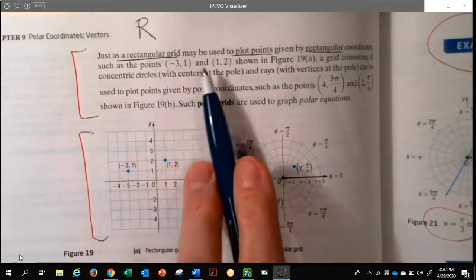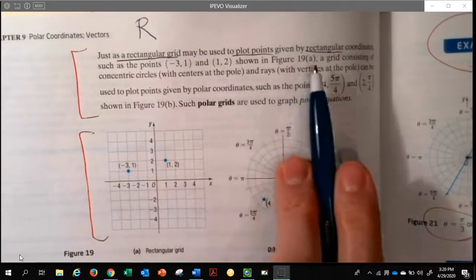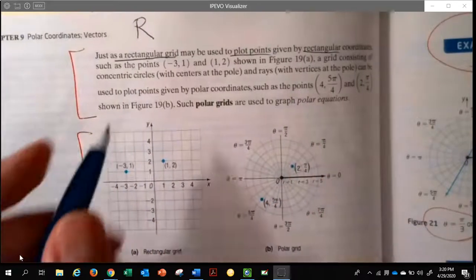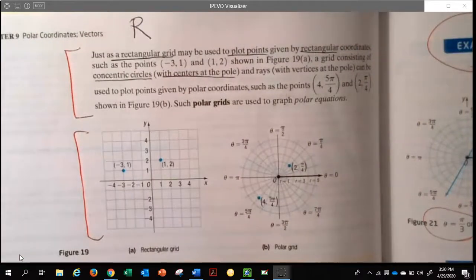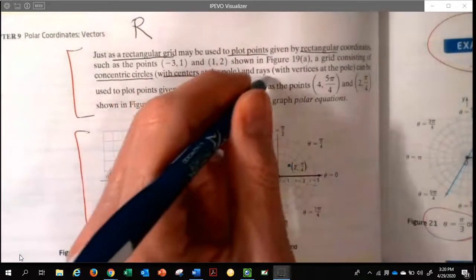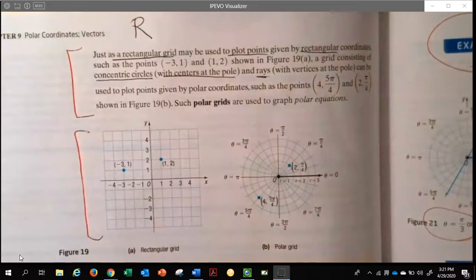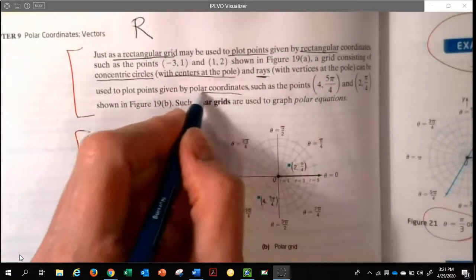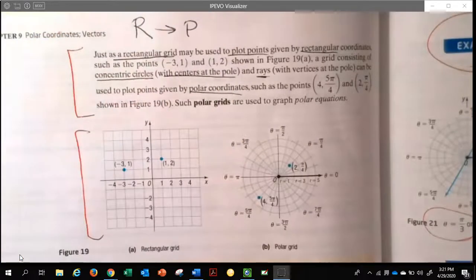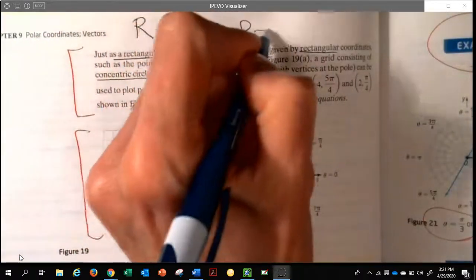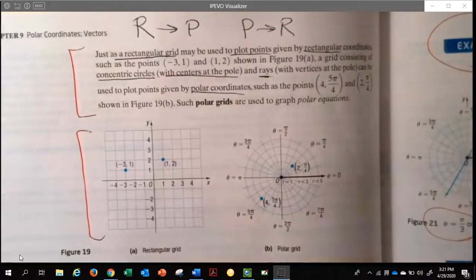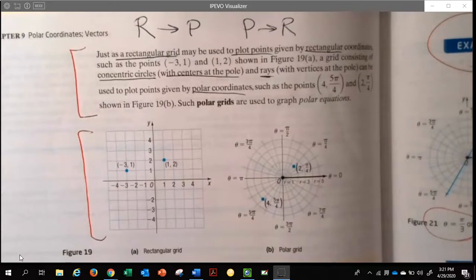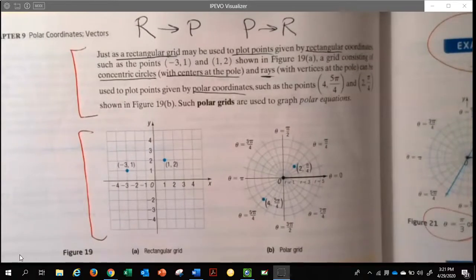When you understand where this point would go and this point, a grid consisting of concentric circles—they all have the same center—and then rays with vertices at what we call a pole, can be used to plot something called polar coordinates. So we're going to go rectangular to polar, polar to rectangular. We're going to play around with this. We're in the world of polar coordinates, graphs, and equations.